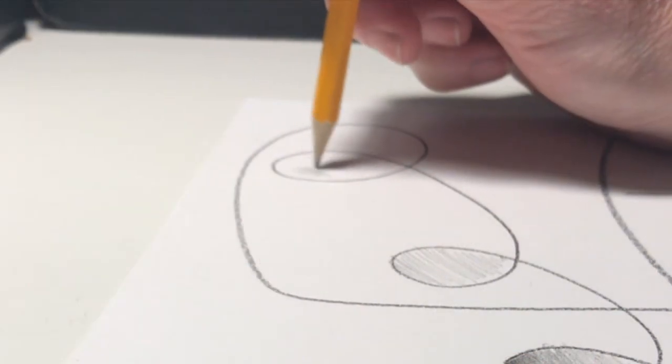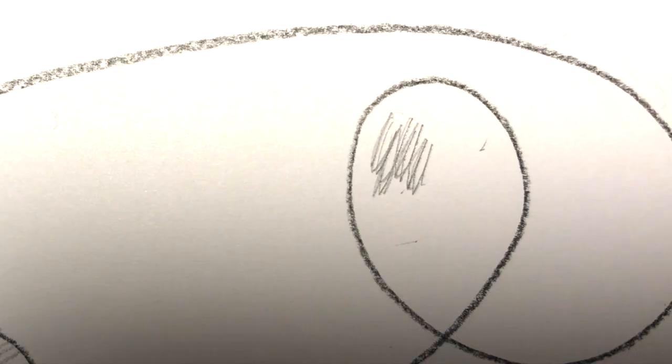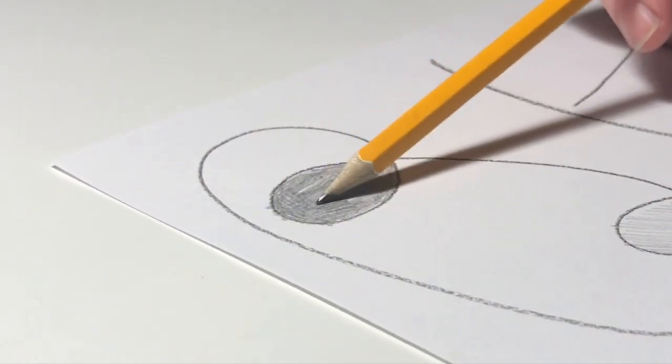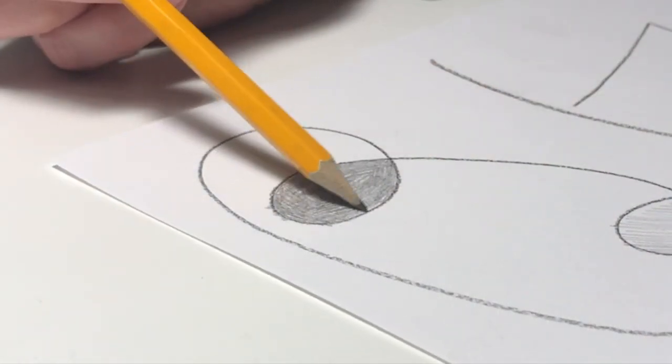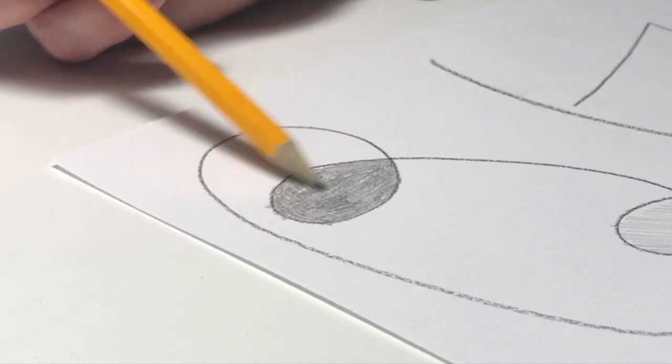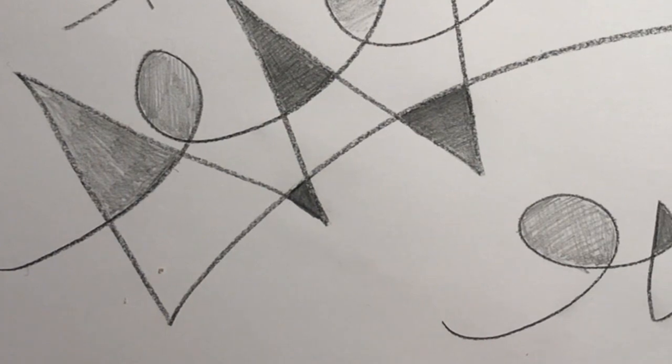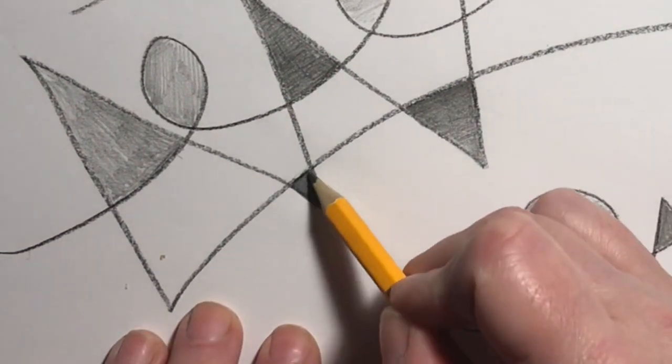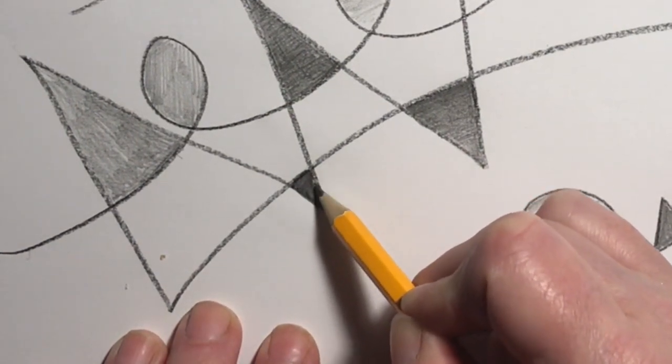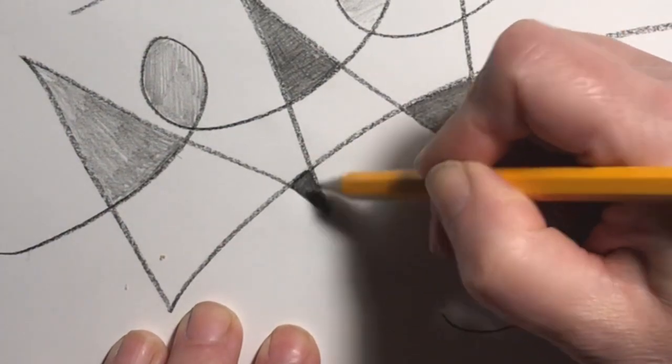If I shade with the tip of my pencil, it makes for a kind of messy line. But if I angle the pencil so it's tipped more on its side, I will get a much smoother texture. I can see exactly how dark can I make this shape by adding layers and layers of dark shade.